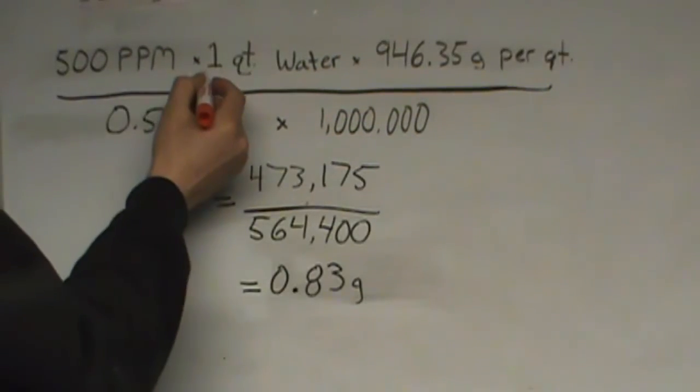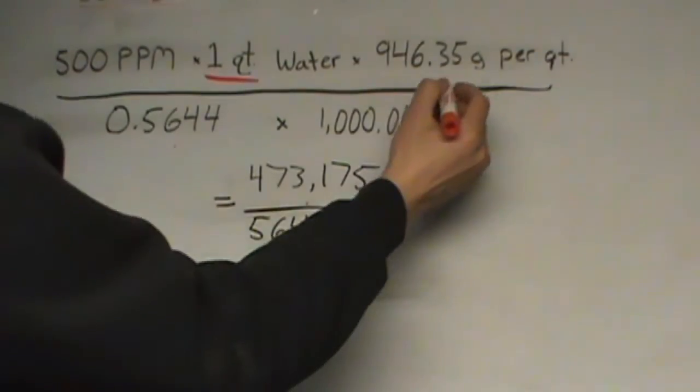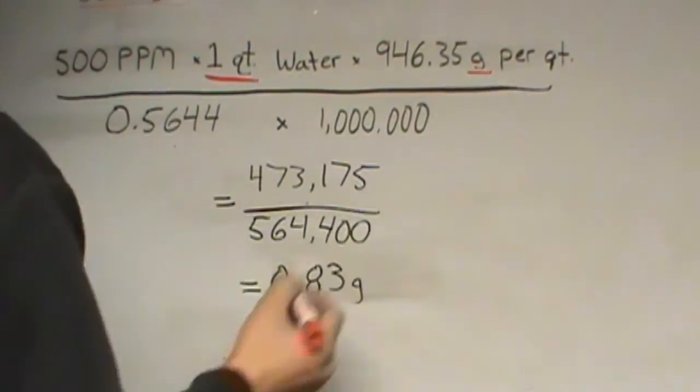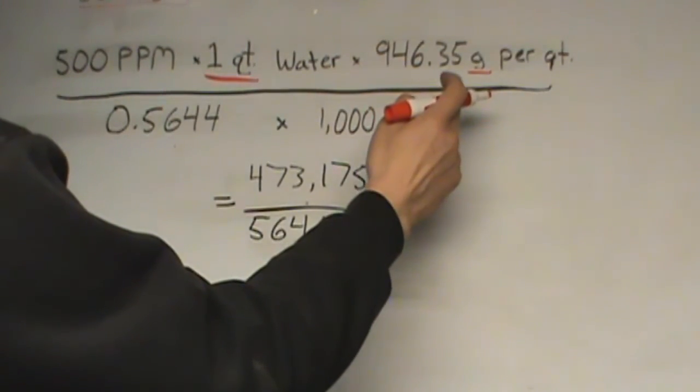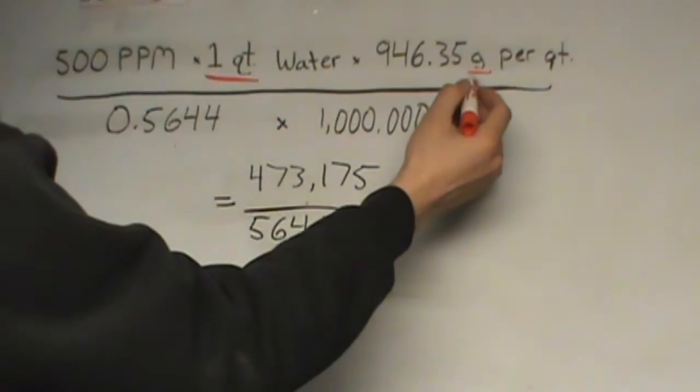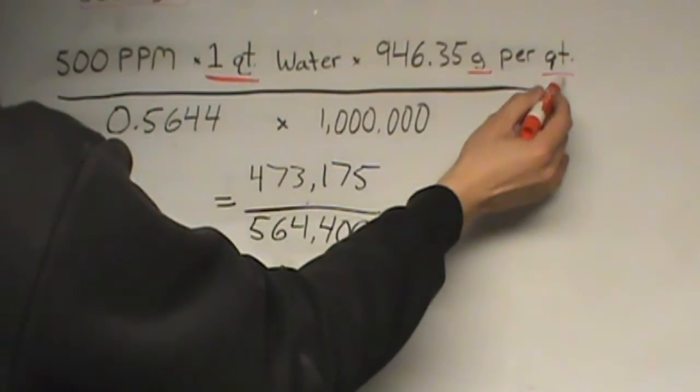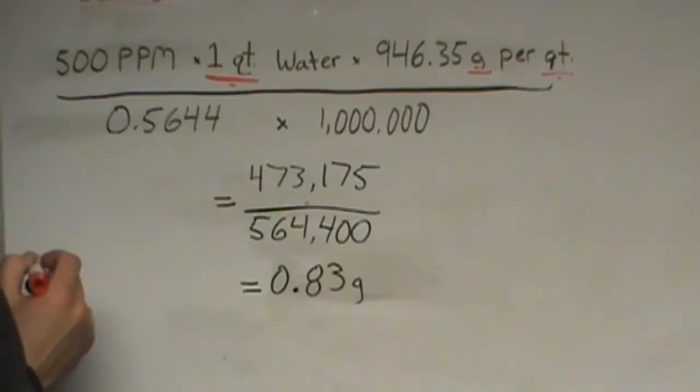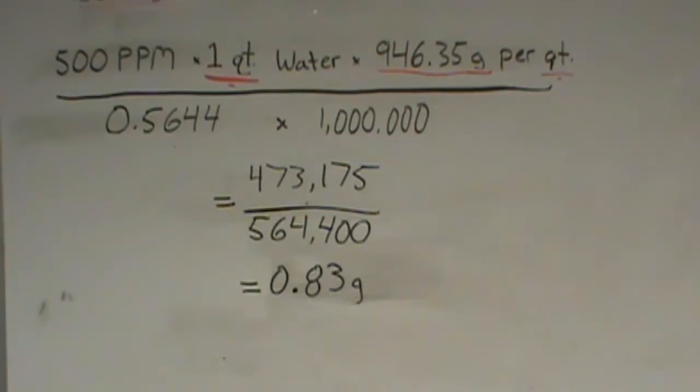I have changed from two gallons of water to one quart of water. I have changed my final unit of measurement from teaspoons to grams. And in this ratio, I'm no longer comparing teaspoons against gallons. I'm comparing grams against quart. Keeping in mind that in this ratio, we must reference that unit of measurement. I've also changed that numerical value because one quart of water weighs 946.35 grams.